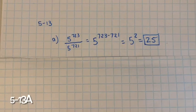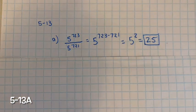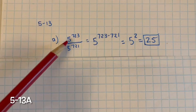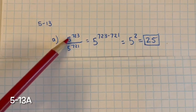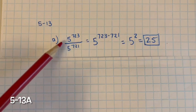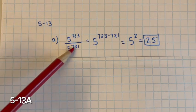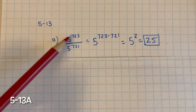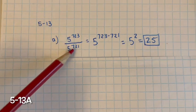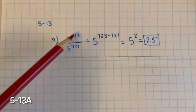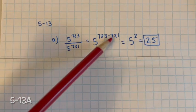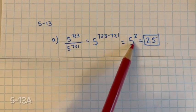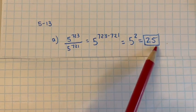For 5.13, we need to write each expression in simplest form. When you have integer exponents with the same base and you're dividing them, you subtract the exponents. I have more exponents in the numerator than the denominator, so it stays in the numerator. We have 723 minus 721, which gives us 5 to the second power, which equals 25.